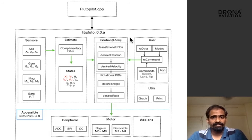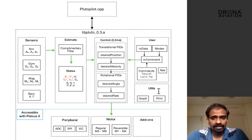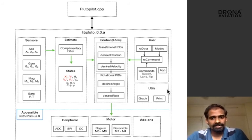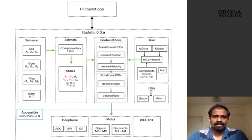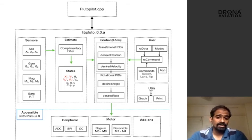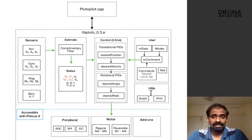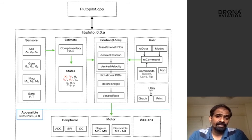Now this is in general the flow of the firmware. Other than this, there are other tools available in the Pluto firmware, for example graphs or print. Those tools are available inside the utils block. There are a few more tools available inside this block. You can check the API reference manual to check what are the various functions that each of those blocks have, in order to understand the various functionalities that the firmware gives access to.